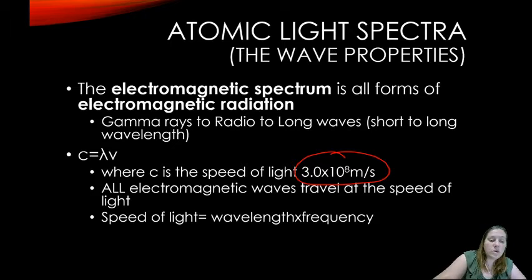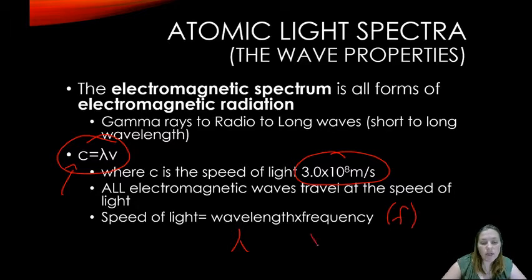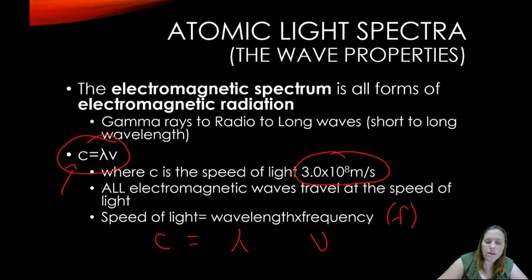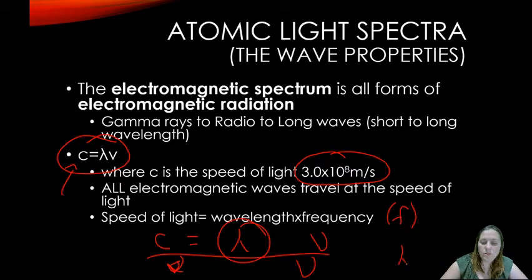The speed of light equals wavelength times frequency: c = λν. In chemistry, frequency is written as ν (a Greek symbol), though in physics you'll often see F. To find wavelength, divide both sides by frequency: λ = c ÷ ν. And frequency equals c divided by wavelength: ν = c ÷ λ. You need to be able to manipulate that equation.